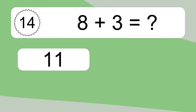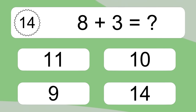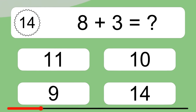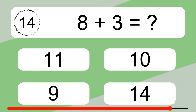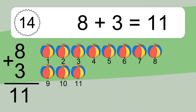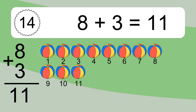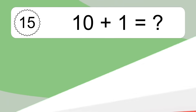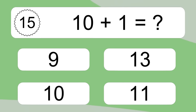8 plus 3 equals what? 8 plus 3 equals 11. Let's count it: 1, 2, 3, 4, 5, 6, 7, 8, 9, 10, 11.